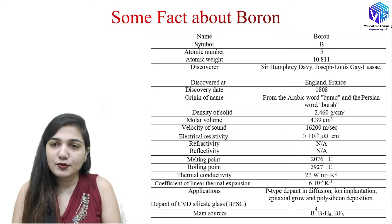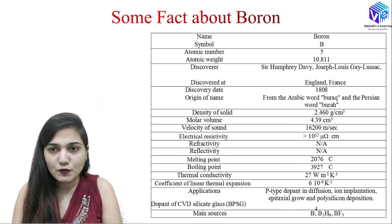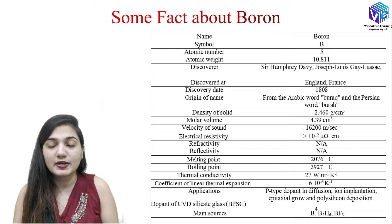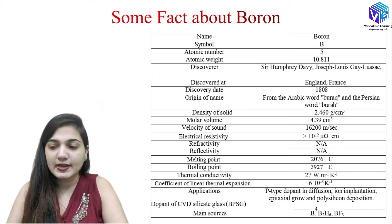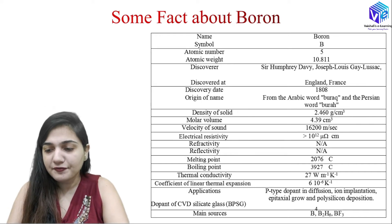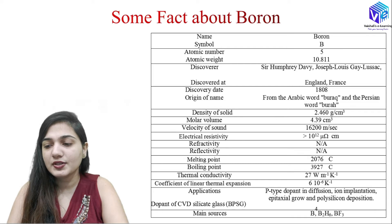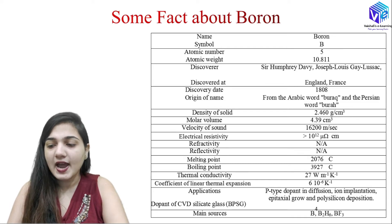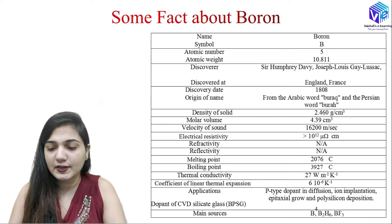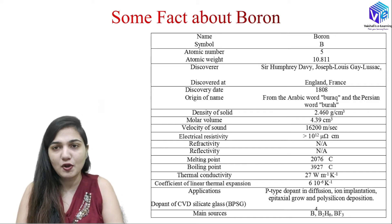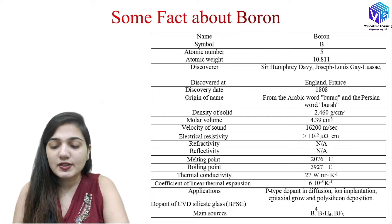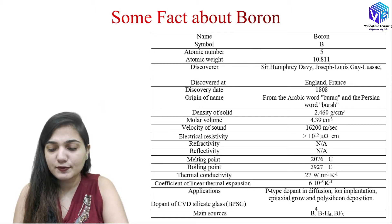Coming to boron — boron is a p-type dopant atom. It has atomic number 5 and is a very small atom, with atomic weight around 10.811. It was discovered by Sir Humphrey Davy and Joseph Louis Gay-Lussac in England and France in 1808. Parameters include origin of name, density of solid, molecular volume, velocity of sound, electrical resistivity, reflectivity, melting point, boiling point, thermal conductivity, and the coefficient of linear thermal expansion.